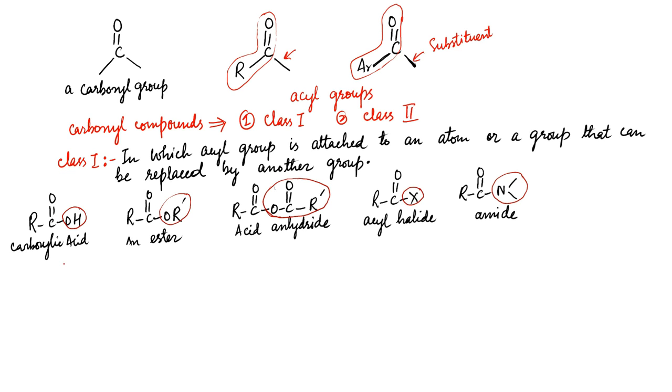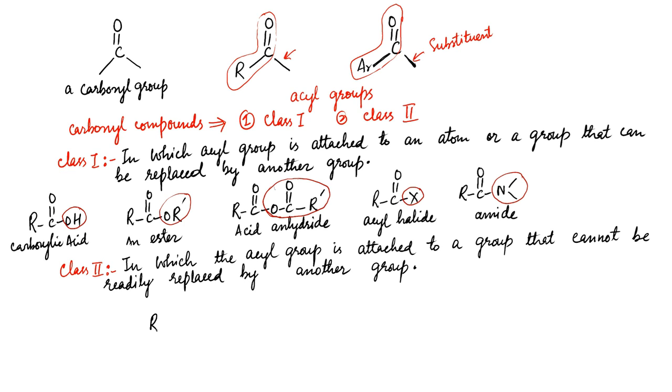Class II carbonyl compounds are those in which the acyl group is attached to a group that cannot be readily replaced by another group. Aldehydes and ketones belong to this class. The H in alkyl or aryl groups of aldehydes and ketones cannot be replaced by a nucleophile.